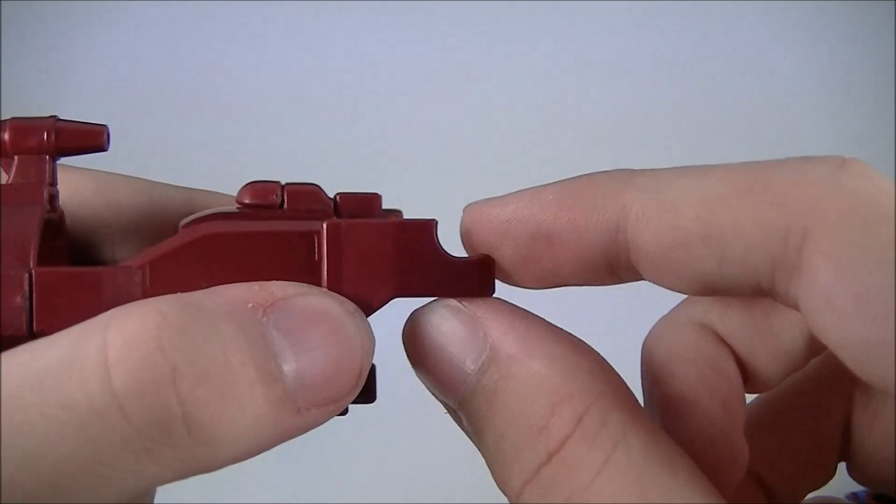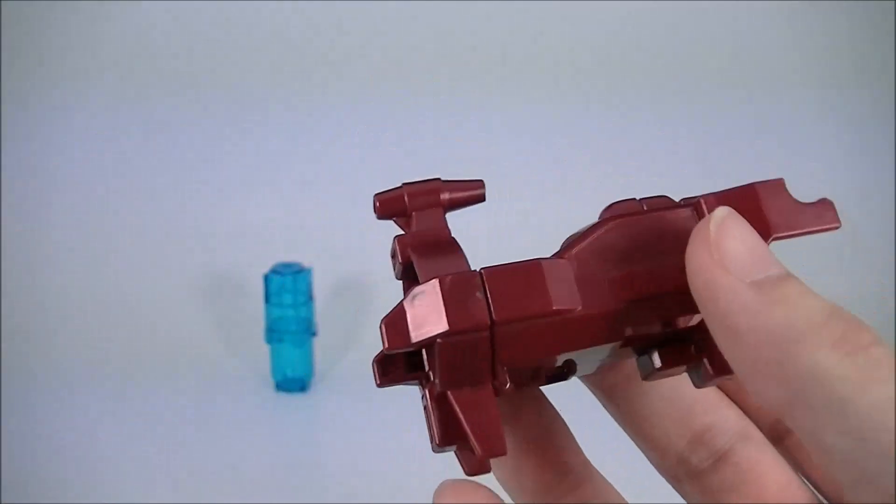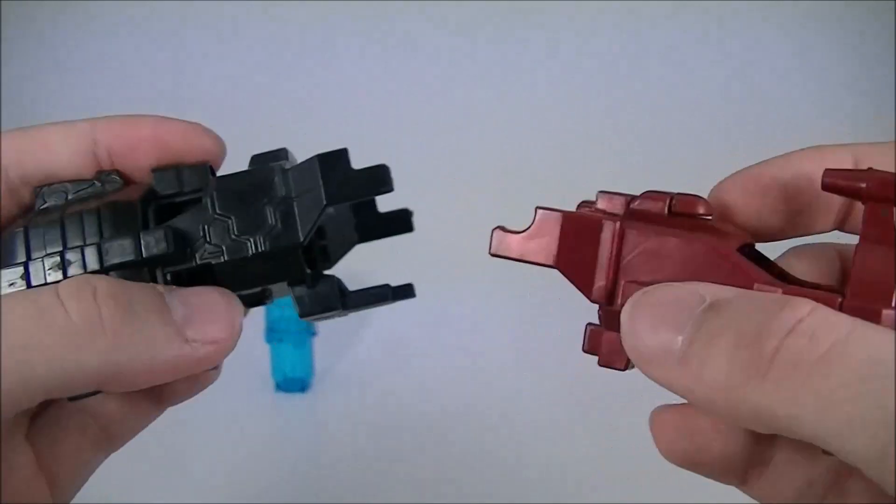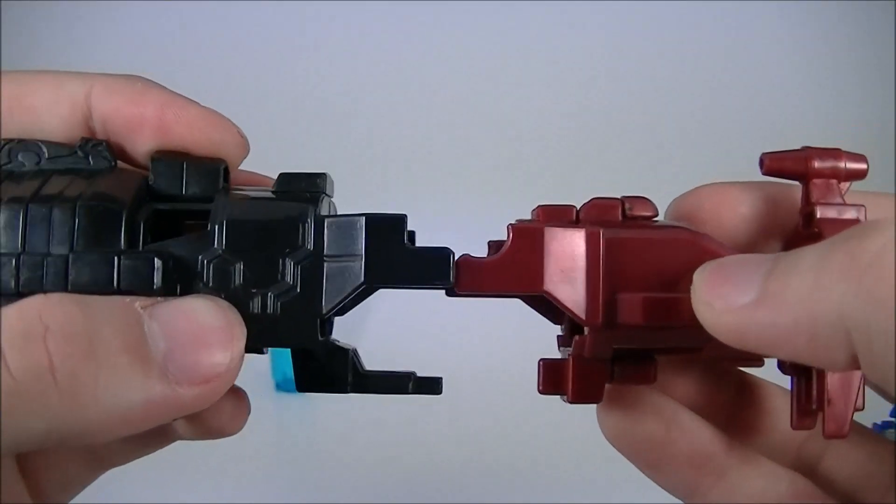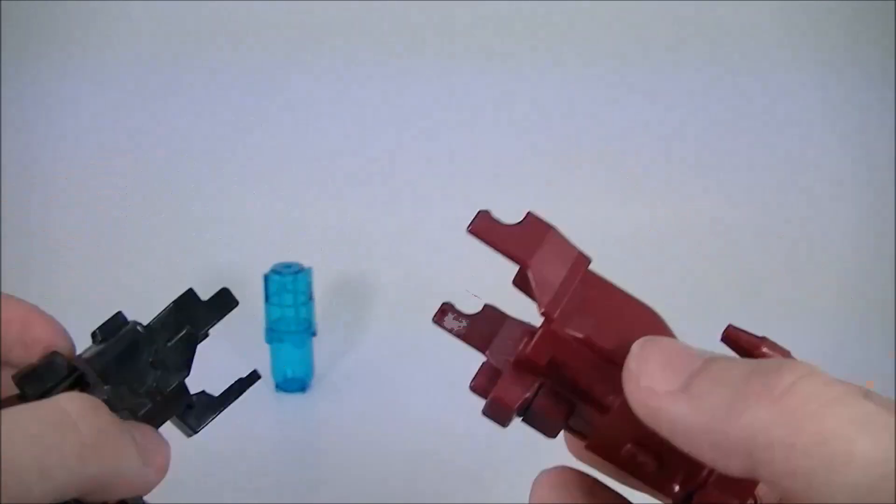Interestingly enough, you do have slightly different attachment points there, if I compare it to something like the Convert Barrel. Yeah, they're almost more hook-shaped. It's kind of strange, but it doesn't function any differently.